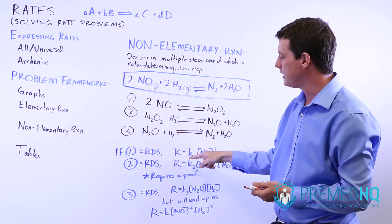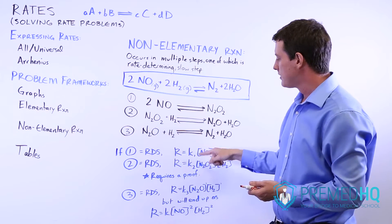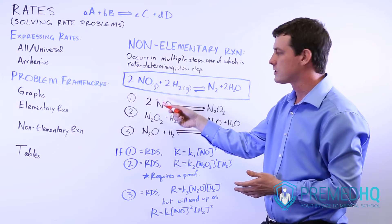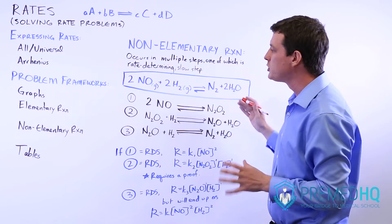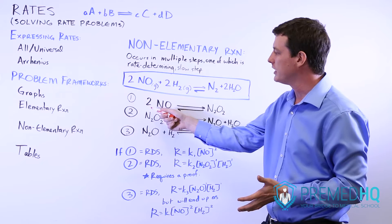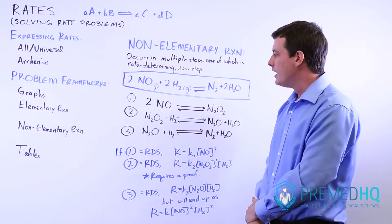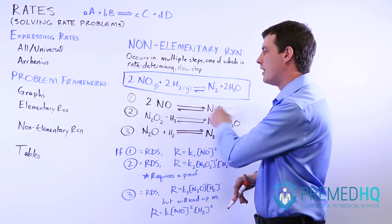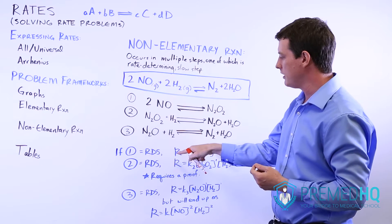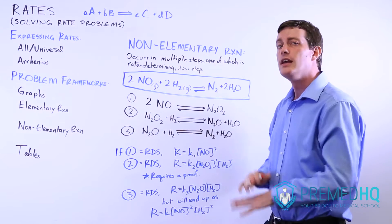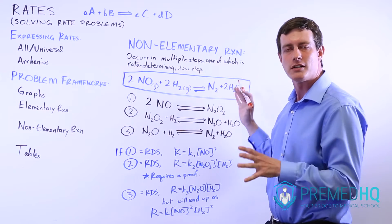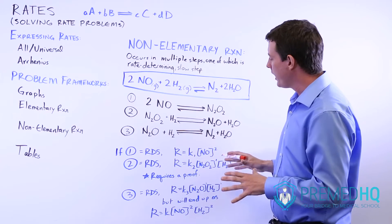So if the first step was the rate-determining step, your rate would equal K1, your rate constant of your first step, times NO to the second power, because you have NO as the reactant and it's raised to the power of two because it has a stoichiometry of two. The reason you can do that is because any one individual step you can treat as though it were an elementary reaction. And NO is something that shows up in your balanced equation, so this is a very legal way of expressing the rate.